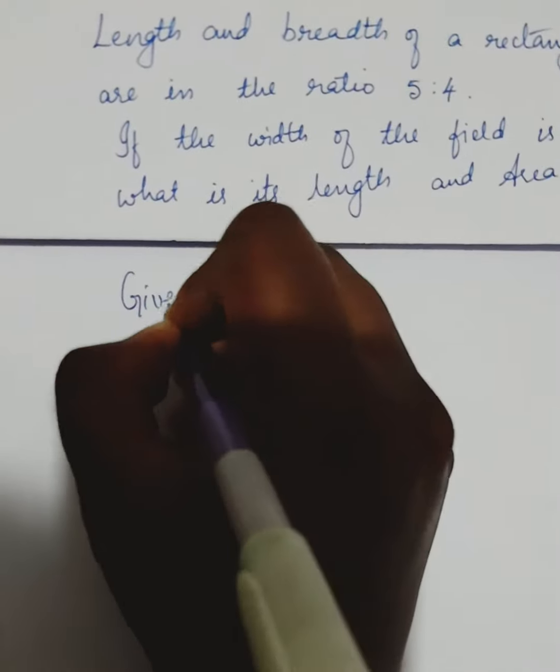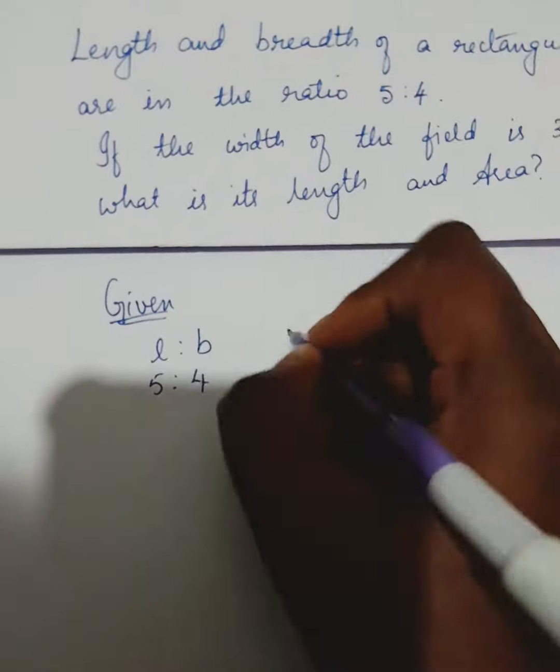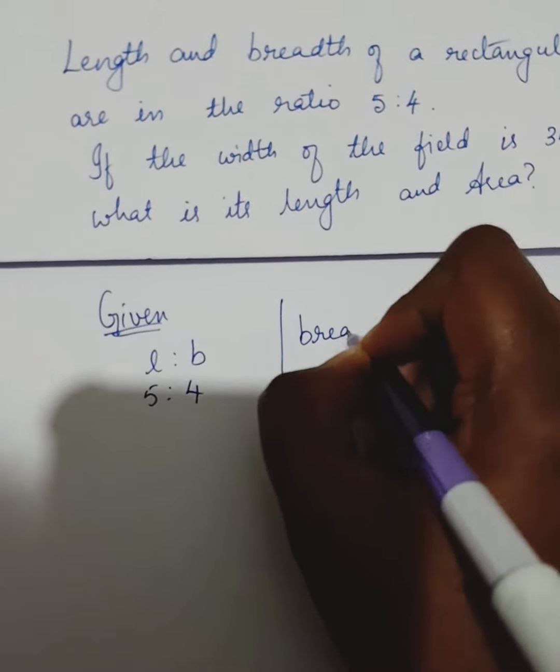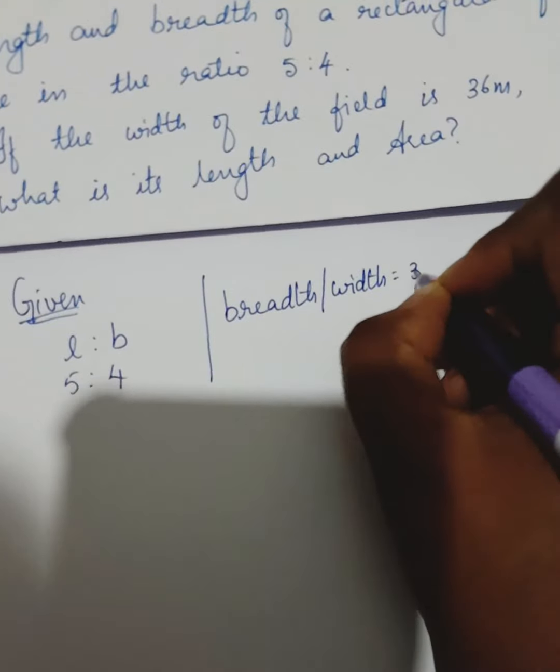So, first let us write what is given. Given is length is to breadth which is 5 is to 4. Also, they have given the breadth or it is also called as the width which is 36 meter.